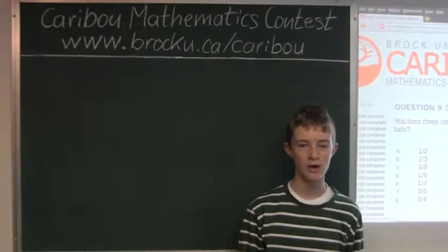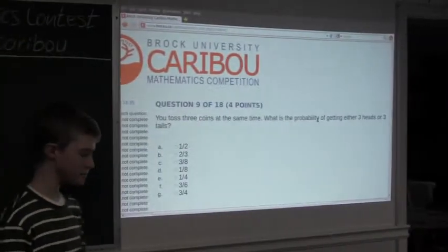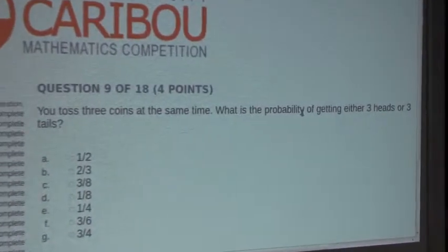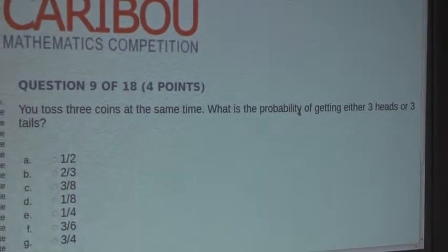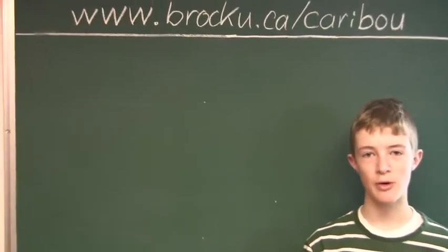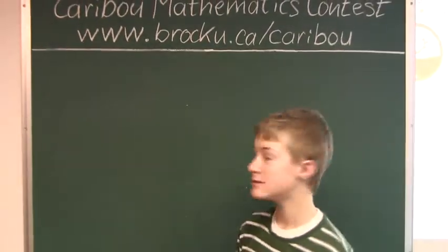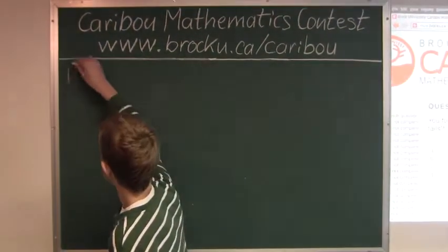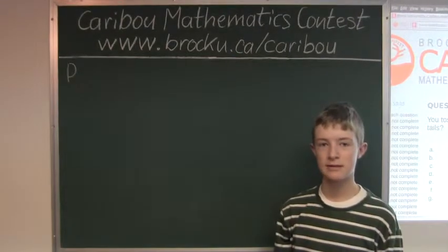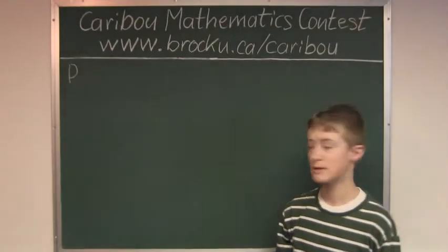So the question is, you toss 3 coins at the same time, what is the probability of getting either 3 heads or 3 tails? The probability of favorable events is the number of favorable events divided by all possible events.